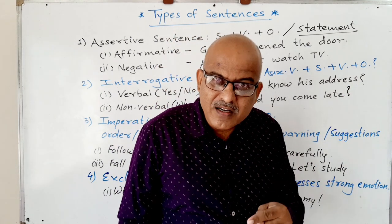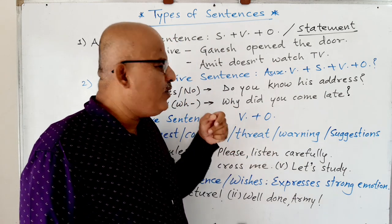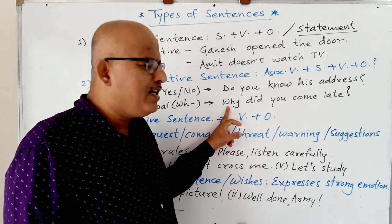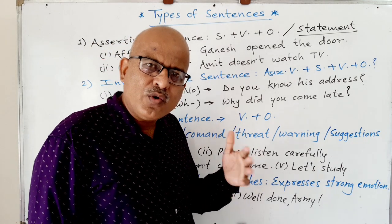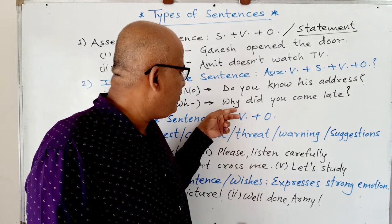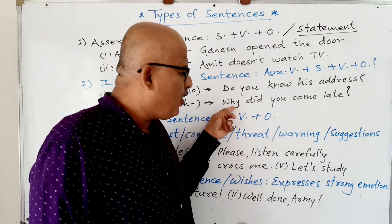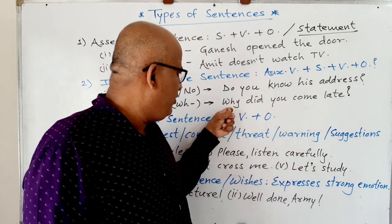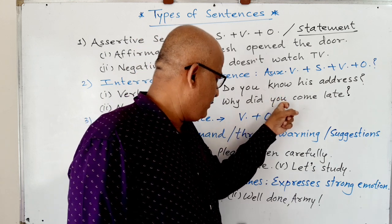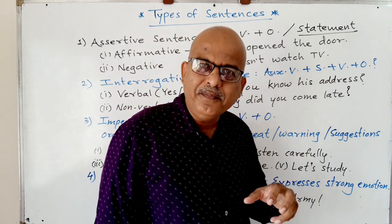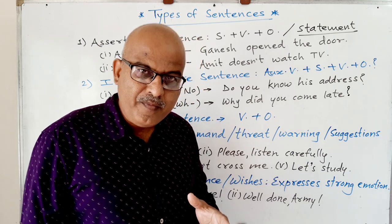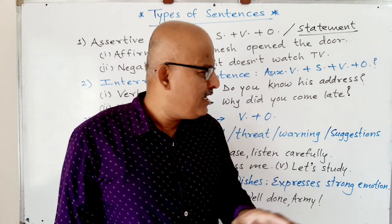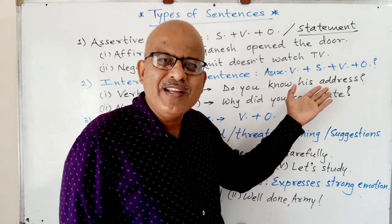A verbal question is a yes/no question, and a WH question is a non-verbal question. WH words are: when, where, why, what, who, which, whatever, whenever, how much, how many. For example: 'Why did you come late?' — WH word, auxiliary verb, subject, verb. Other examples: 'Where do you live?' 'When do you study?' 'How much time do you spend in studies?'